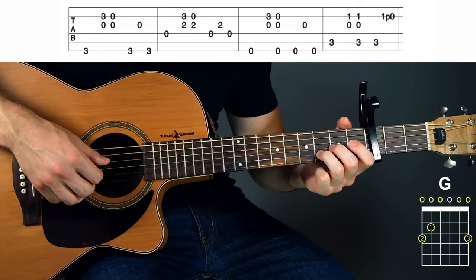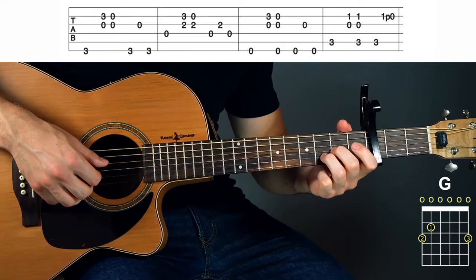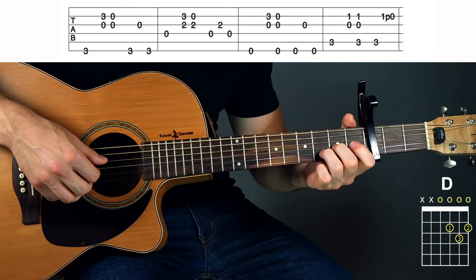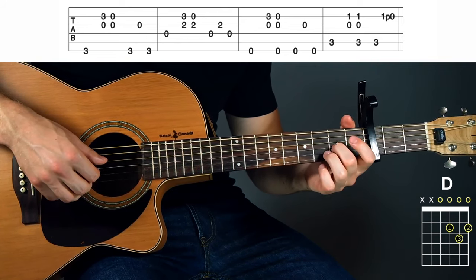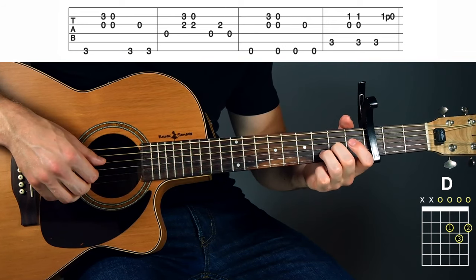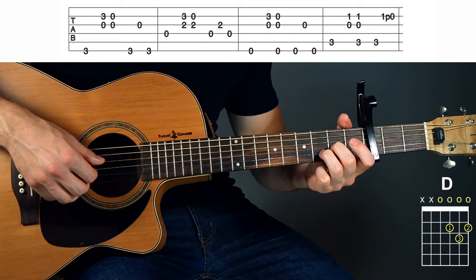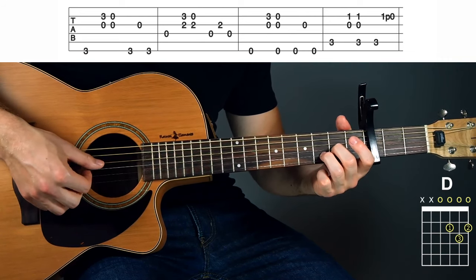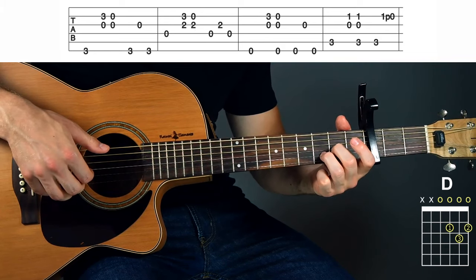And then we're going to use that same pattern for all of our next sections. So next we move on to the D. We can leave off the 1st string. You'll put your 2nd finger on the 2nd fret of the 3rd string and your 3rd finger on the 3rd fret of the 2nd string and leave those there. So then we'll play our bass note, which is the 4th string, and then play your 2nd and 3rd strings.